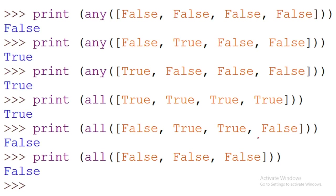To summarize: 'all' means all values must be true to return true. 'any' means any one value being true returns true; if all values are false, it returns false. Check the results in your editor. If you are satisfied with this video and learned something from it, please like, share, and comment on this video. Share it with as many students as possible. Thank you very much — dhanyawad!